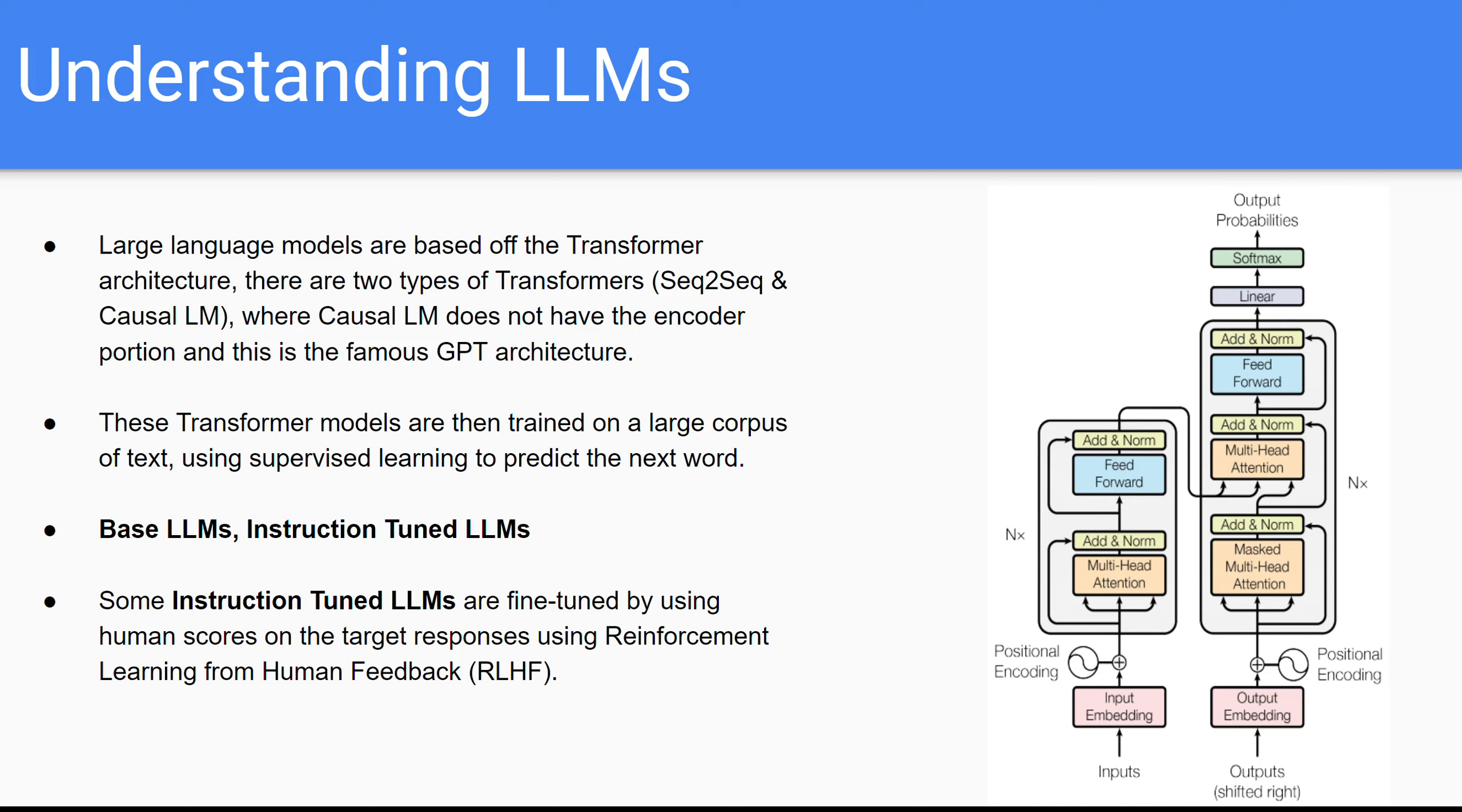This is called a sequence-to-sequence transformer. There's another type of transformer called causal LM, and this is what the GPT architecture was based off of. But starting with the most fundamental one, this is our sequence-to-sequence transformer.